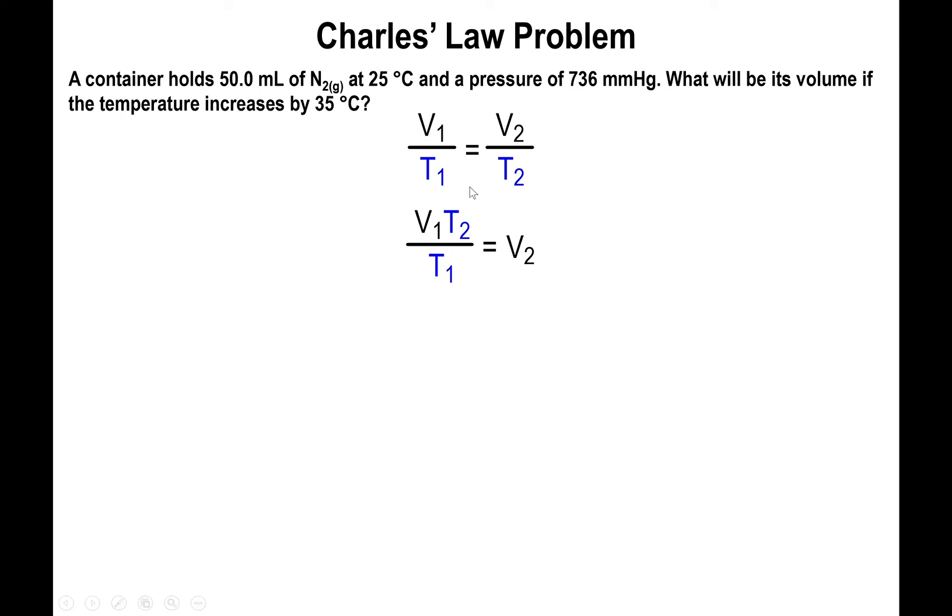Perhaps the most important part of this problem is that the temperatures cannot be input as degrees Celsius; they have to be in Kelvin. The reason is because degrees Celsius has negative values for temperature. If you plug in negative temperature for T2 and T1 is positive, you'll end up with a negative volume, which doesn't have any meaning. We need to change to Kelvin because the temperature will never be negative. Also notice the semantics: the temperature is increasing by 35 degrees, not changing to 35 degrees Celsius. So the final temperature has to be 25 plus 35, then change that to Kelvin.